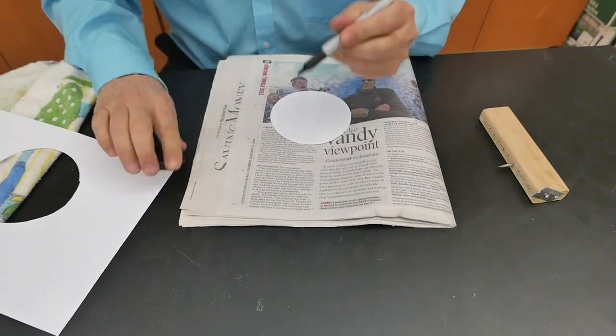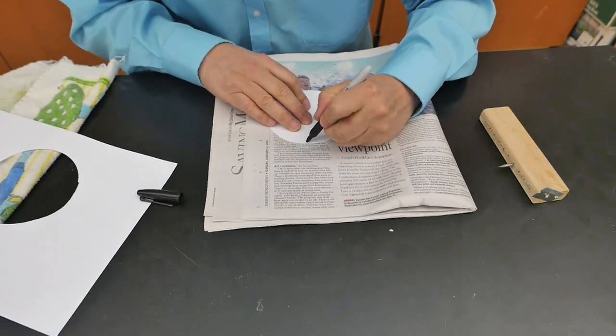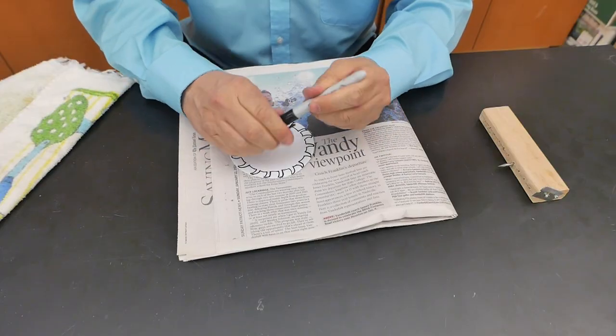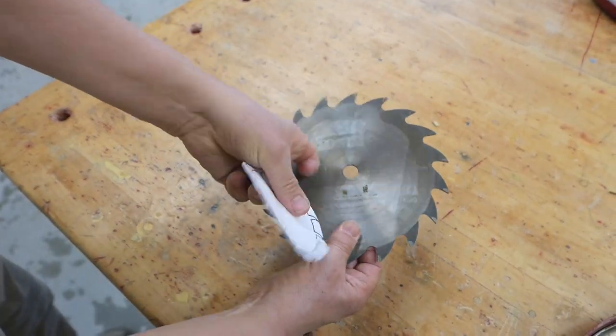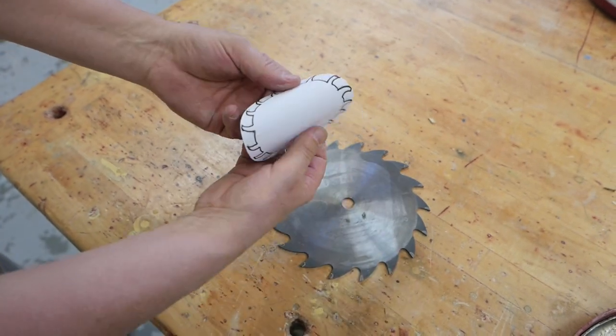Now, next I want to take a marker and I'm going to put some teeth on it. Now that's finished, I want to see if I can get it to act like this steel saw blade, only it's paper.